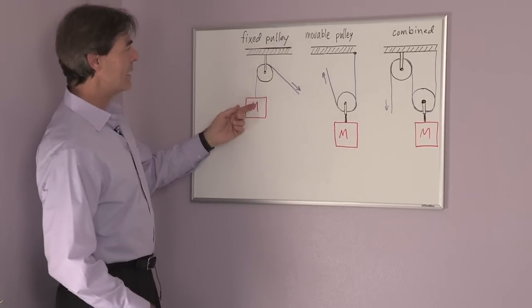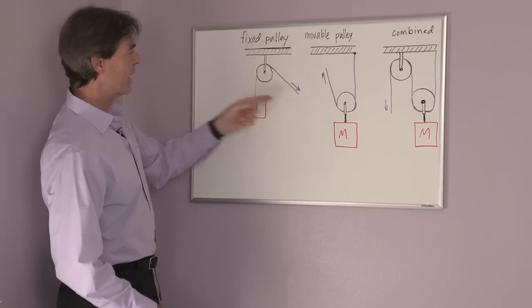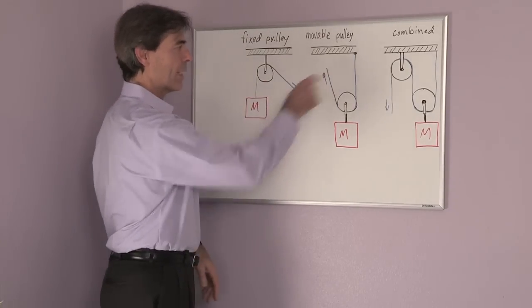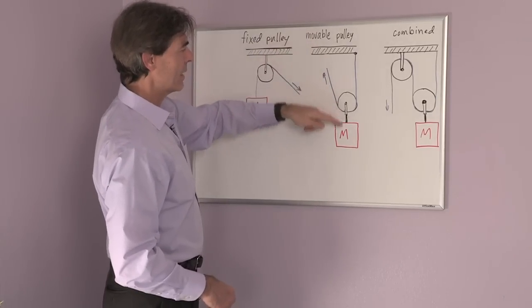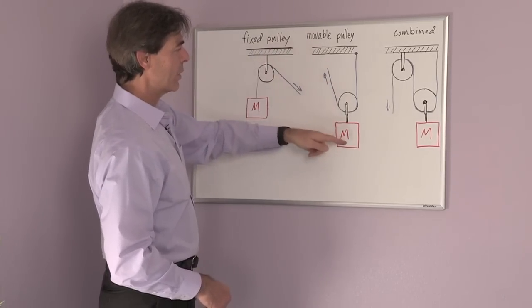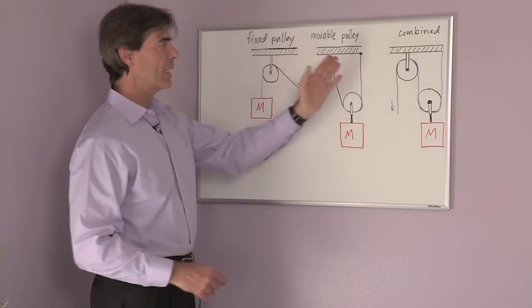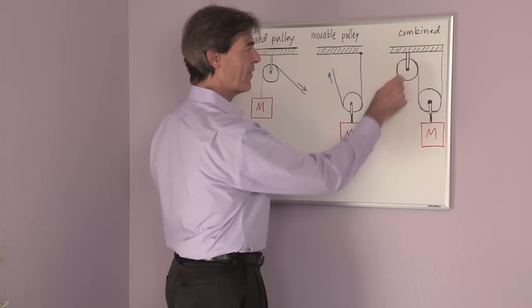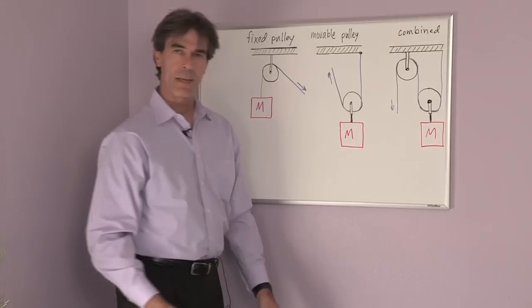So in the one case, the fixed pulley, you just pull down on the string and the mass will lift up. In the other case, the way I've drawn it here, you have to lift up on the string in order to lift your mass. But of course, you can combine fixed pulleys and movable pulleys where here is my movable pulley, here's my fixed pulley, and in this case, I pull down and the mass lifts up.